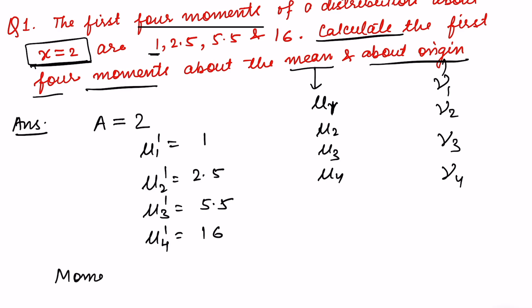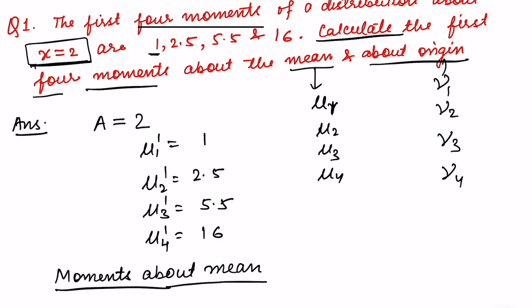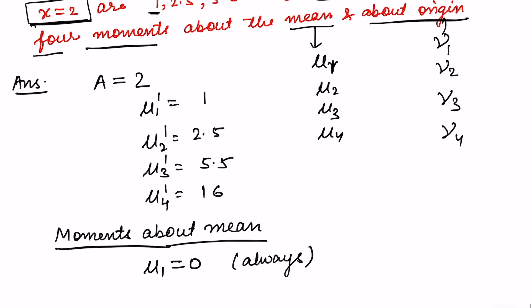Let us find the moments about the mean first, using the relations derived in our previous video. The first moment about the mean, mu 1, is always 0 — this is always true. For mu 2, the relation is mu 2 dash minus mu 1 dash squared, which equals 2.5 minus 1 squared, giving us 1.5.